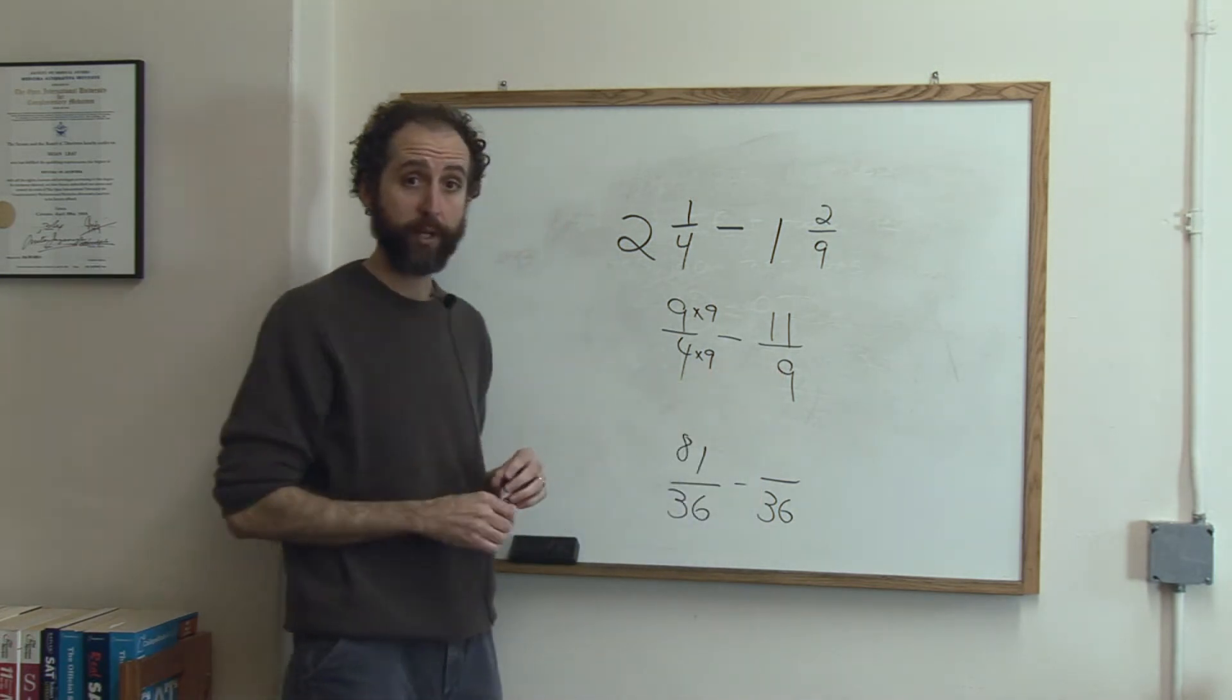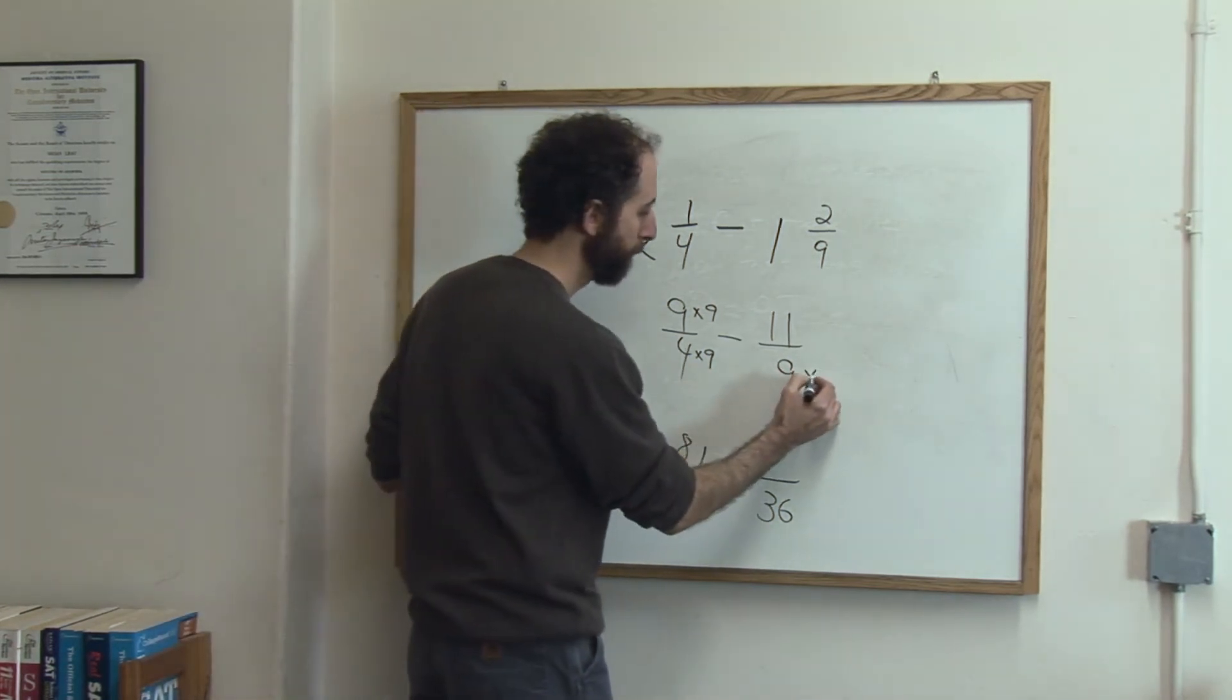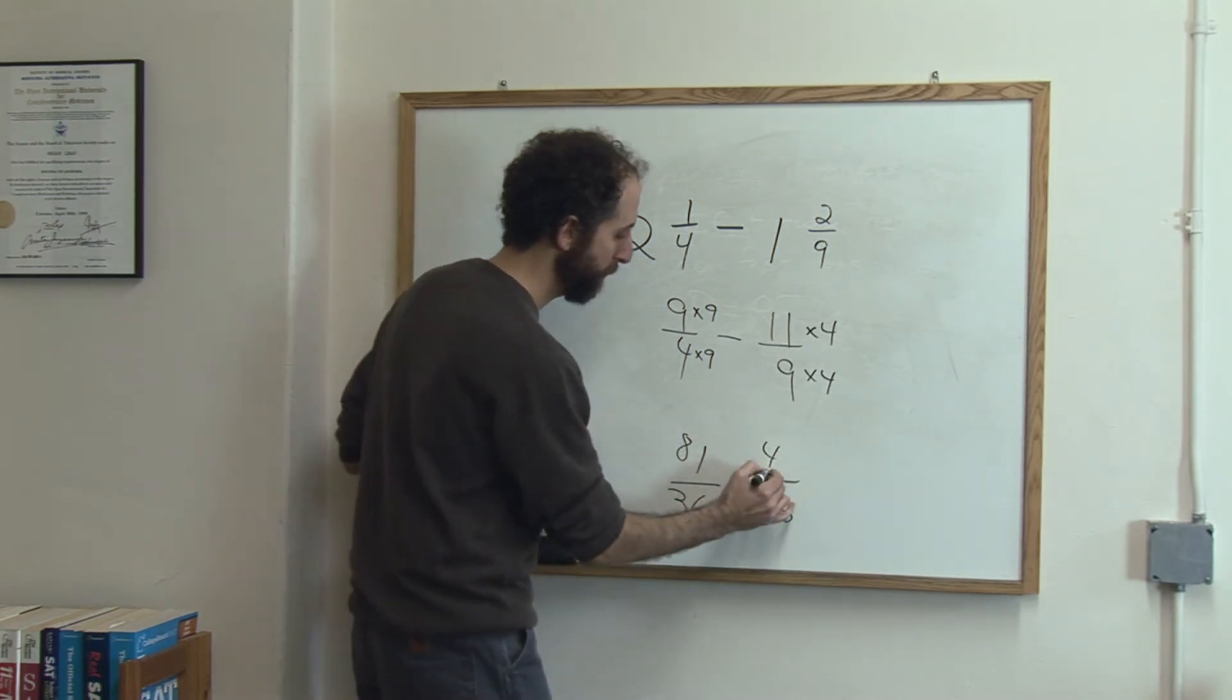What do we need to multiply 9 by to get 36? The answer is 4, so we do the same on the top, gives me 44.